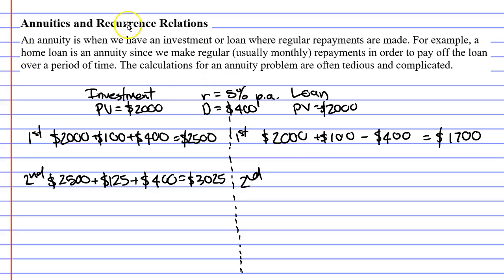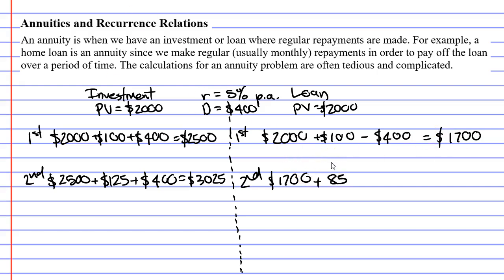What's going to happen with our loan? We now owe $1,700, not $2,000. So we're going to start with our $1,700 and calculate 5% of that. 5% of $1,700 is $85.